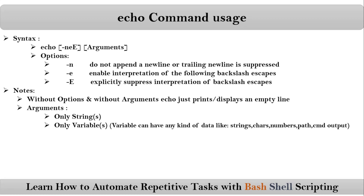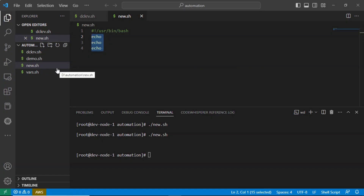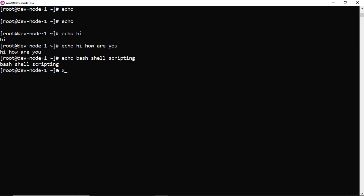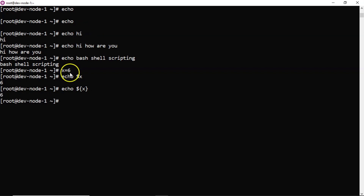You can also provide variables as arguments for your echo command — maybe one variable or multiple variables. The variable value could be anything: a string, character, or number — integer or float. Any system path or some command output also. Suppose I am taking a variable x, then I can do echo ${x}. Whenever you are using variables, the best practice is to use curly braces for your variables.